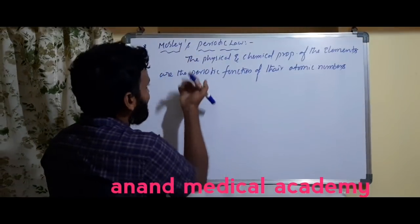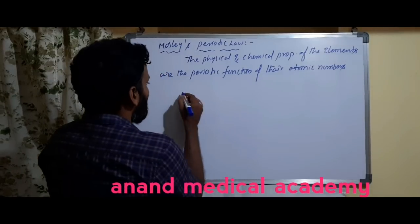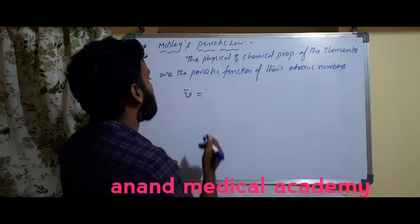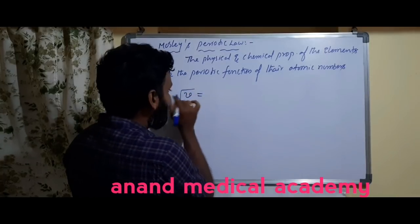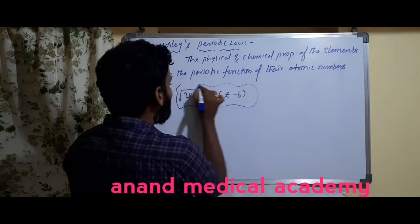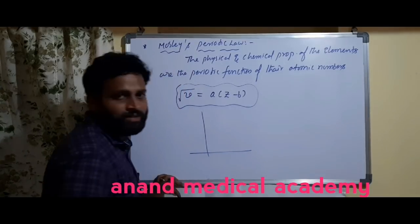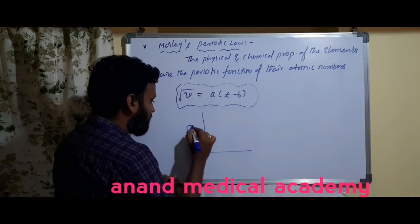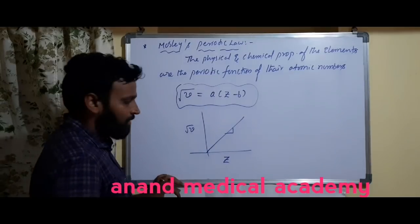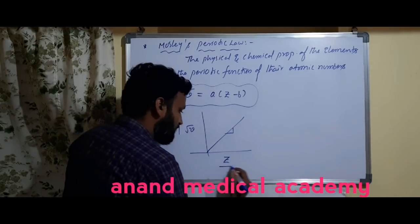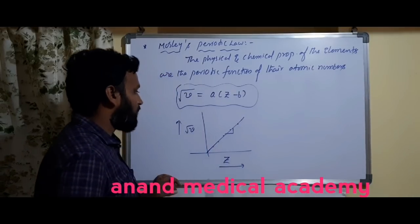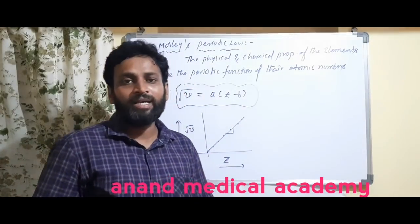Moseley gave atomic numbers by sending X-ray radiation through elements with frequency ν, and he gave the relation: √ν = a(Z − b), where a and b are constants. He observed that unlike the previous curve, a plot of √ν versus Z gives a straight line with a positive slope — meaning as frequency increases, atomic number increases.